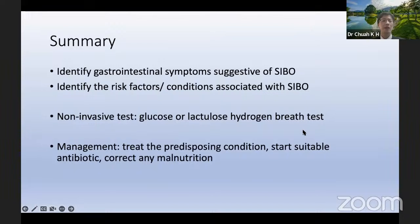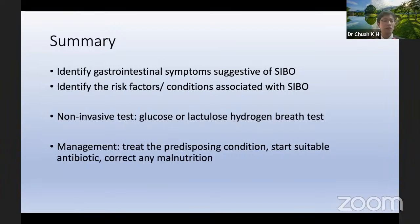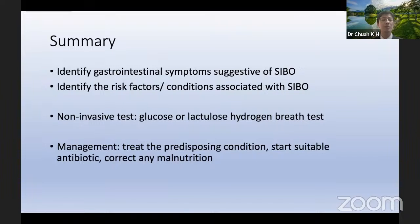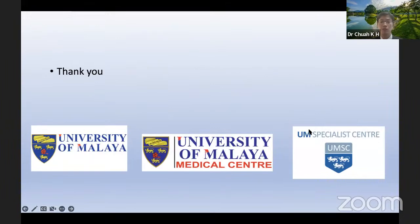In summary: identify GI symptoms suggestive of SIBO; identify risk factors and conditions associated with SIBO; consider non-invasive tests like glucose or lactulose hydrogen breath test; and in management, treat the predisposing condition, start suitable antibiotics, and correct any malnutrition. Thank you, and I'm happy to accept any questions.